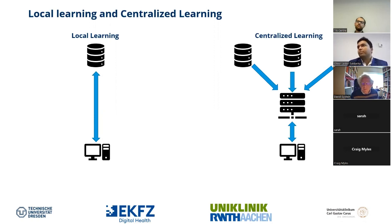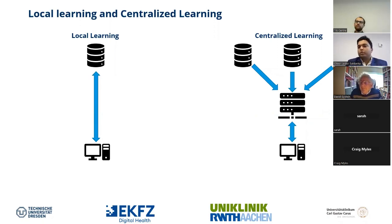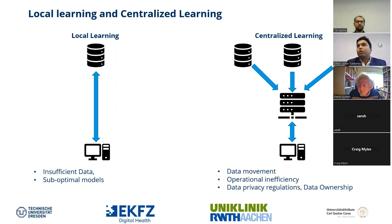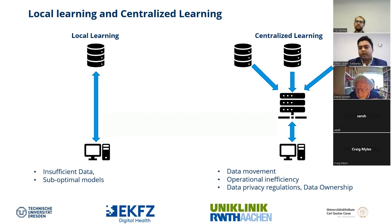In centralized learning, multiple data centers — maybe three or n different institutes — all send their data to a single server, where a model is used to predict targets such as microsatellite instability. However, local training has disadvantages: the data is insufficient and the models are suboptimal. Centralized learning can produce good models, but there's a lot of data movement back and forth, leading to inefficiency.